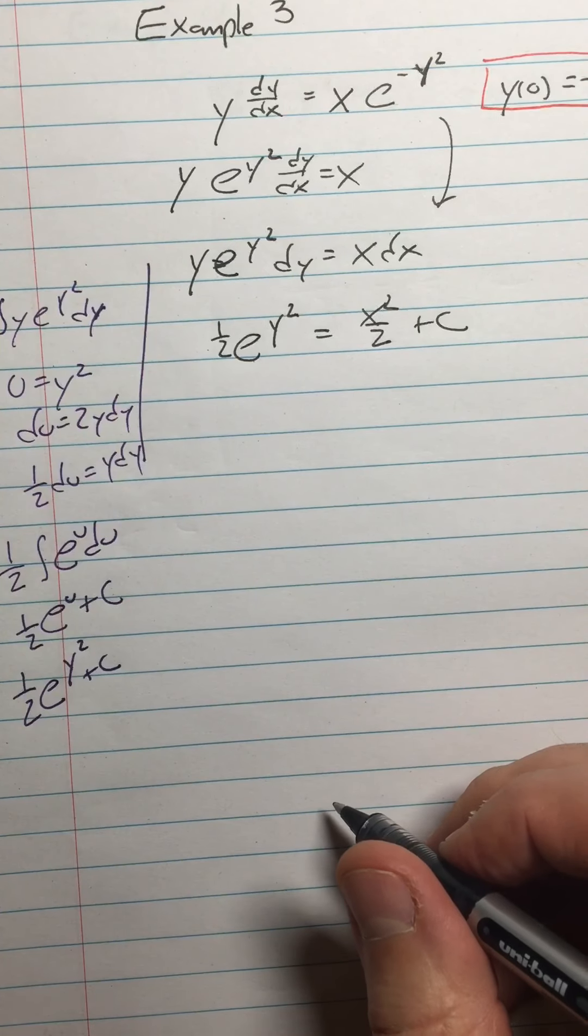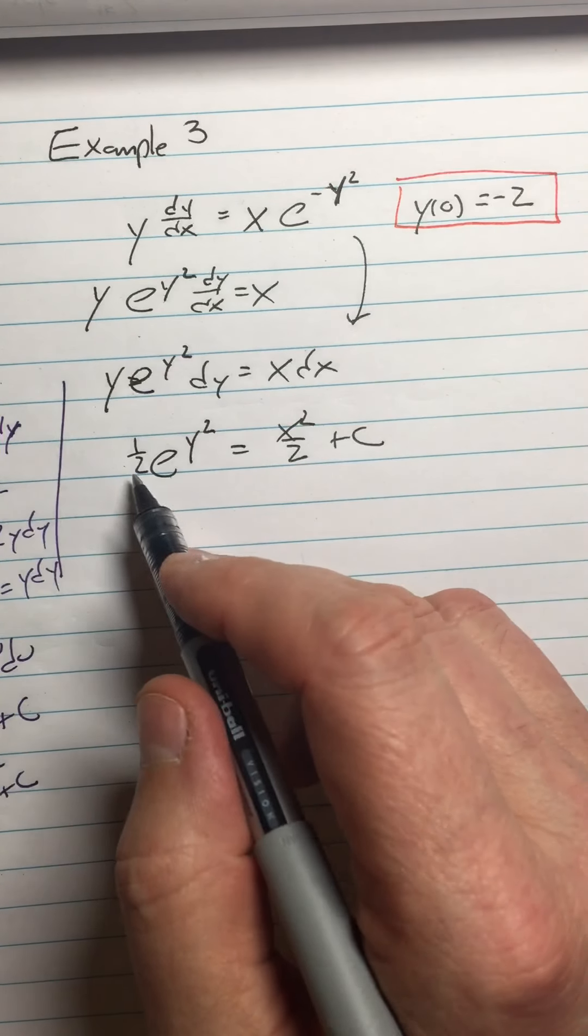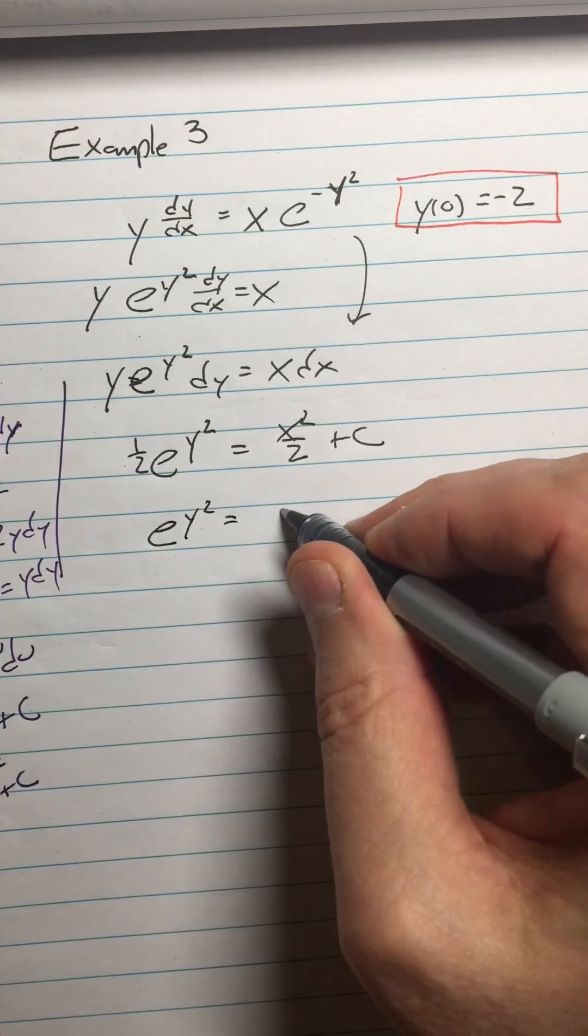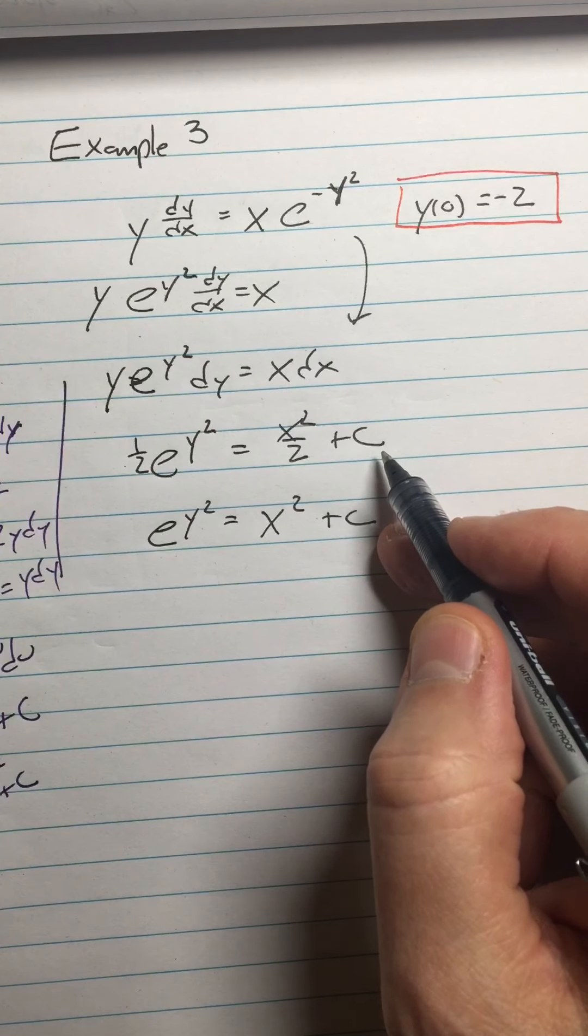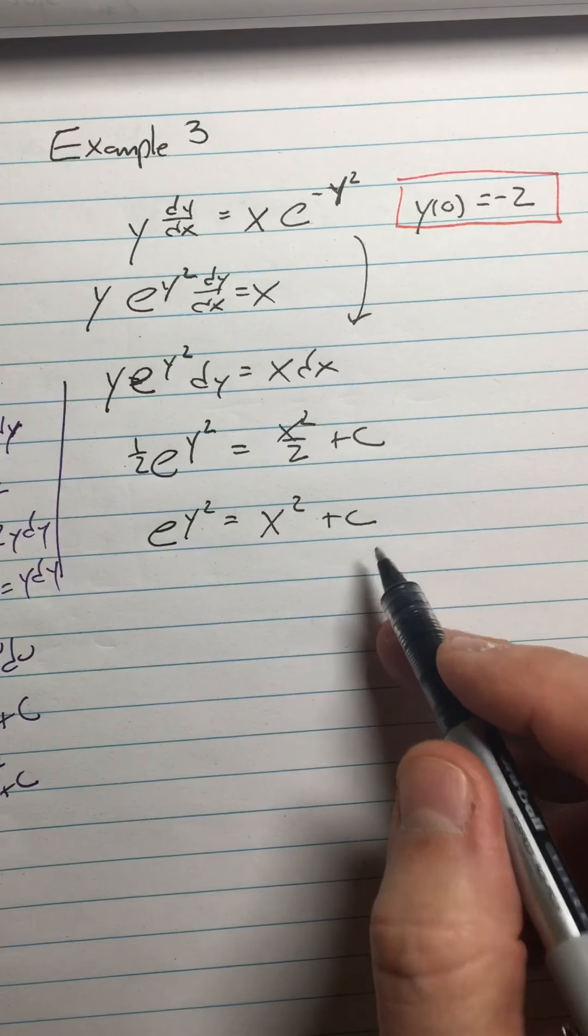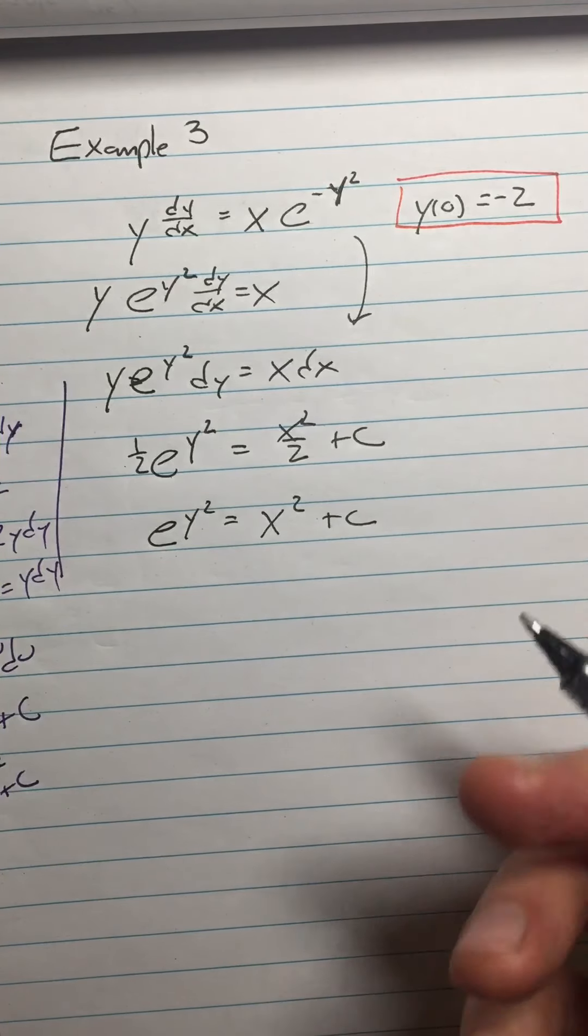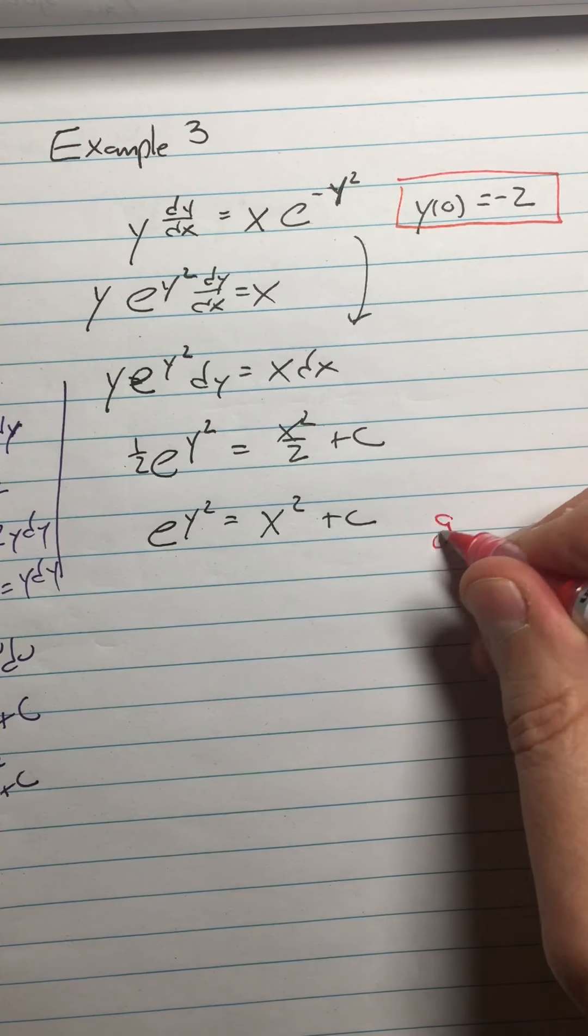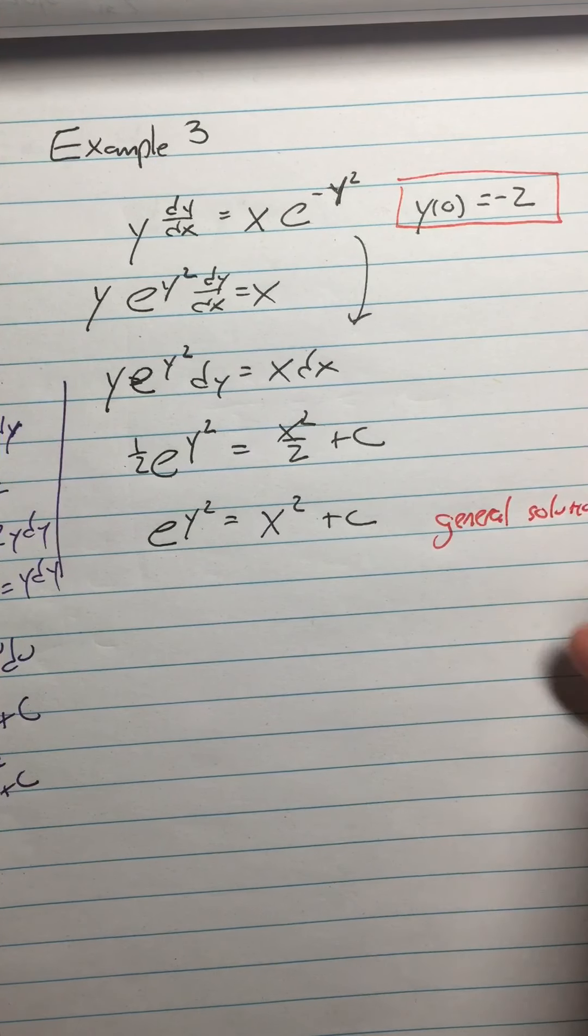All right, I'm not going to put the plus c. I'm integrating this as well: x squared over 2 plus c. All right, so there you go. Now I can plug this in and solve for this c. But what I'd like to do first is multiply everything by 2. e to the y squared equals x squared. And now I'm going to have a different c here. I'm going to get the same equation either way. All right, so this is our general solution here. That's our general solution because it has the c in it.